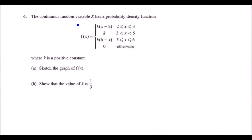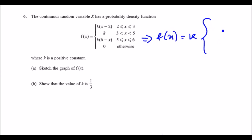The continuous random variable x has the following PDF. For parts a and b, we need to sketch the graph and find the value of k, which is multiplied throughout. Looking at the equations, we can see they are all straight lines. I would rewrite everything as f(x) = k times (x minus 2), then 1, then (6 minus x), each with their respective ranges.